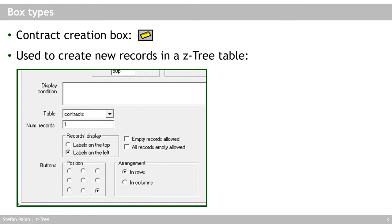The contract creation box allows users to create new records — new rows — in a Seatree table. For example, imagine an experiment where people negotiate or trade with each other in a market, and a subject can make an offer that other subjects should see. This offer is processed in Seatree as a row in a table that specifies or contains the offer details.